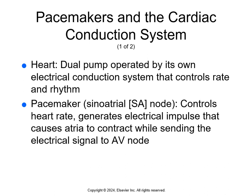The heart has a natural pacemaker — it's a pump operated by its own electrical system that controls the rate and rhythm. The sinoatrial or SA node controls the heart rate, generating the electrical impulse that causes the atria to contract and sends the signal to the AV node. It's responsible for rate and rhythm of the heartbeat. When the SA node doesn't function, the AV node takes over, typically causing 40 to 60 electrical impulses per minute, giving a slower heart rate than the normal 60 to 100.